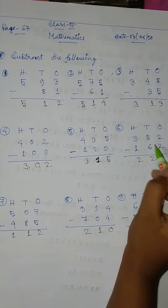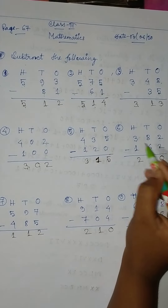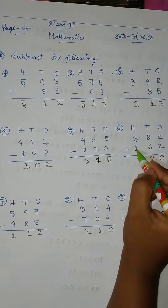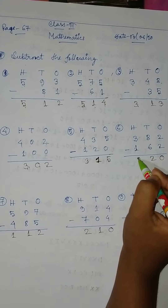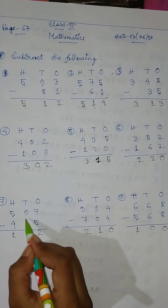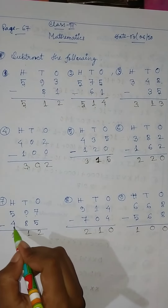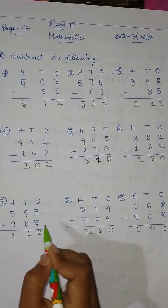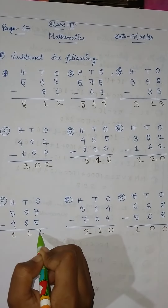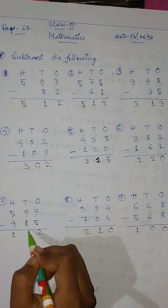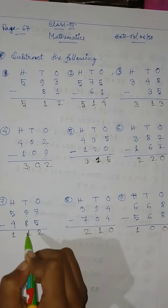8 minus 6 equal to 2, 3 minus 1 equal to 2. Okay, then 597 minus 485: 7 minus 5 equal to 2, 9 minus 8 equal to 1.